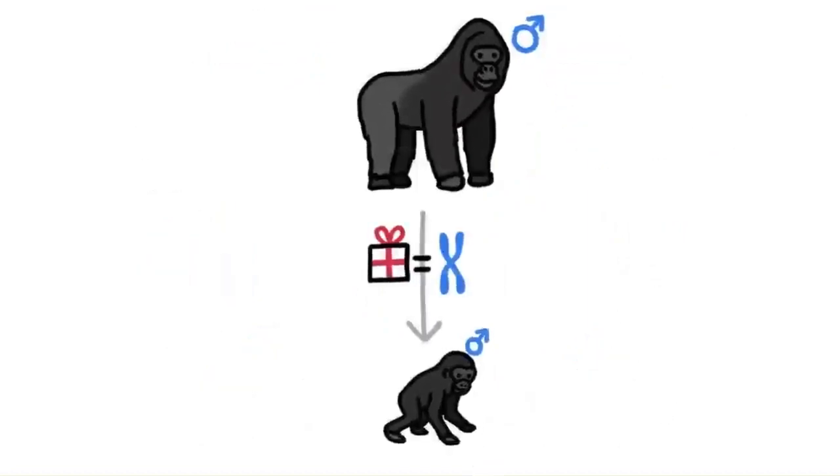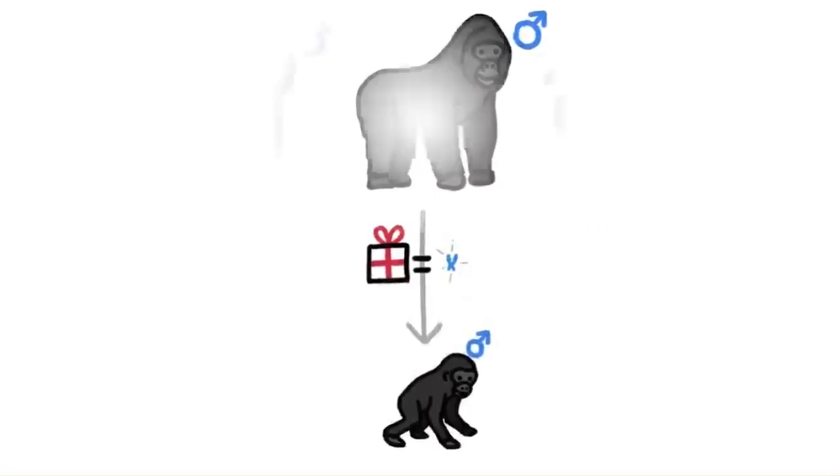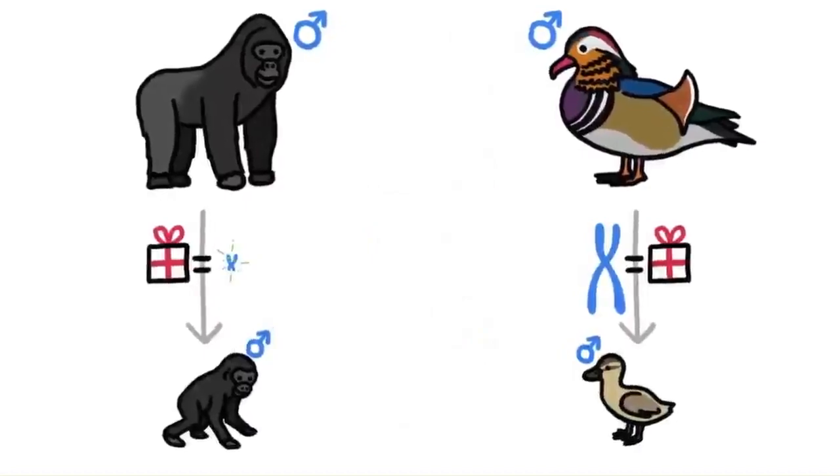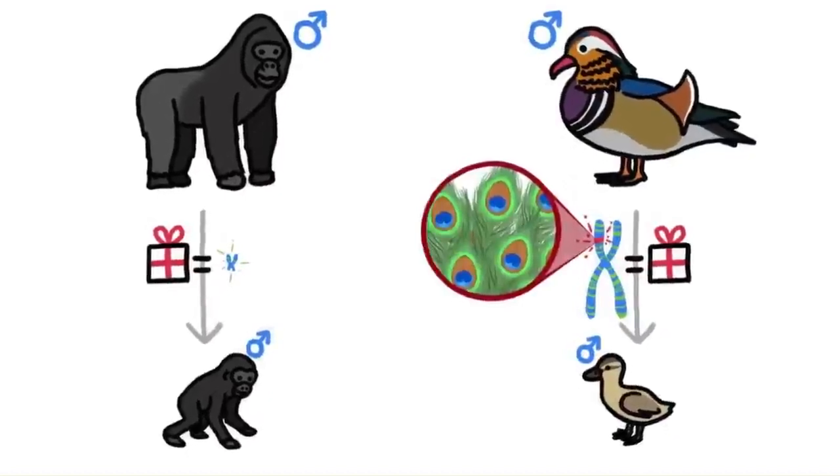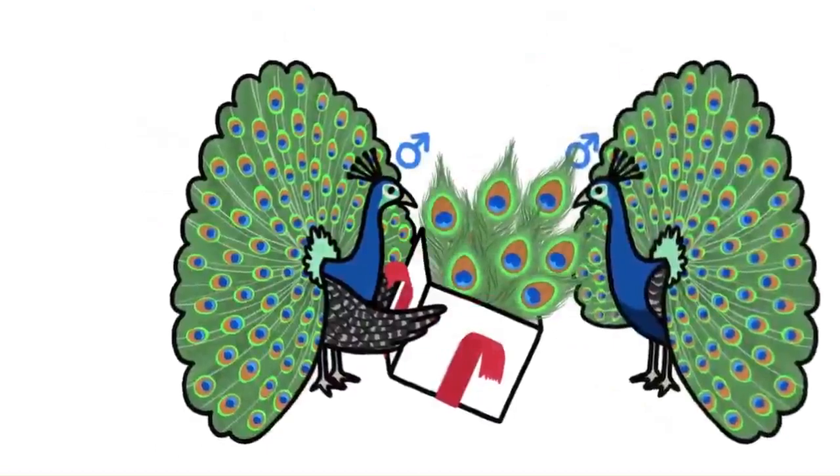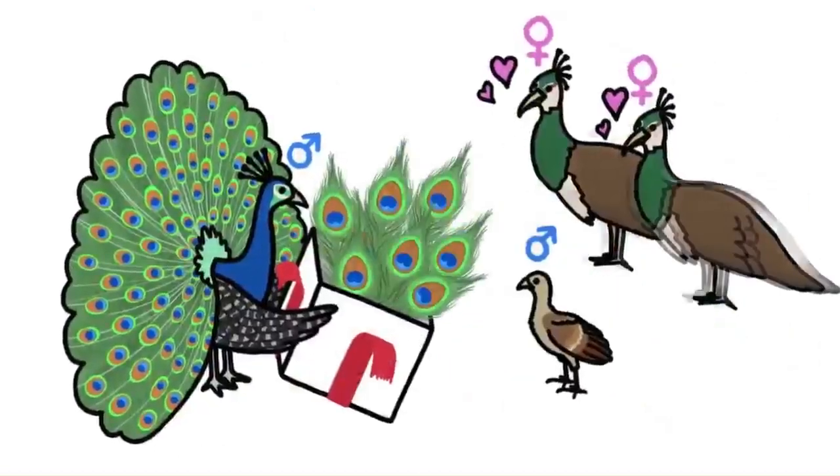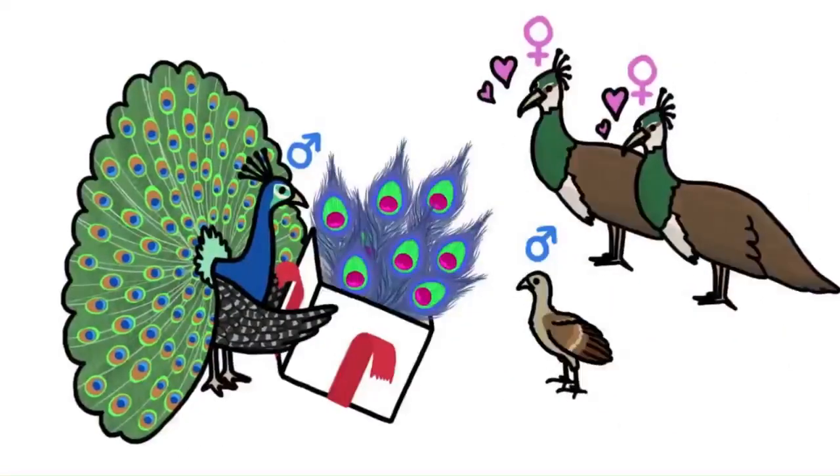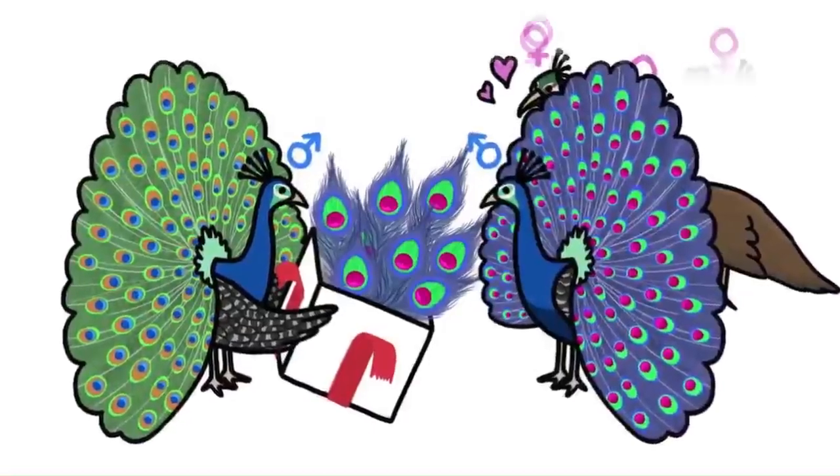Male birds, on the other hand, have way bigger sex chromosomes with lots of genes, and therefore have higher chances of passing a mutation, like one for extra sexy tail feathers, directly to their sons, who in turn can attract more mates and potentially pass a mutation for extra extra sexy tail feathers to their sons, and so on down the line. In short, male birds' comparatively huge sex chromosomes are the reason much more exaggerated male traits have evolved in birds than in mammals.